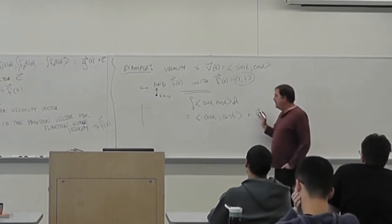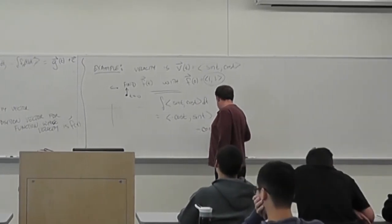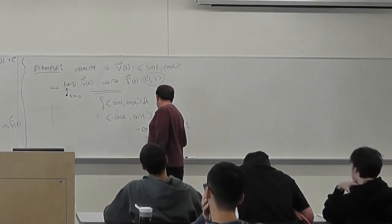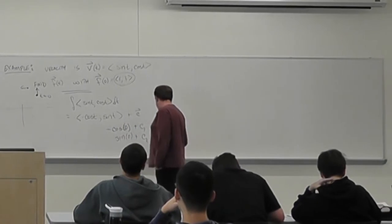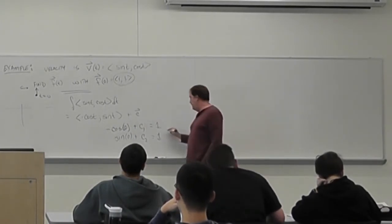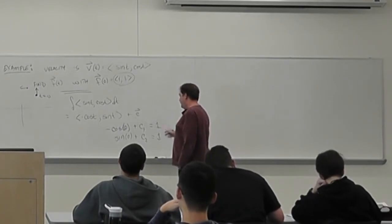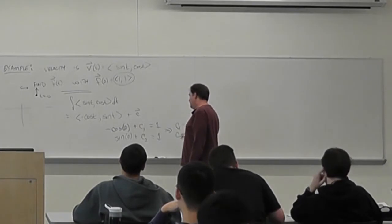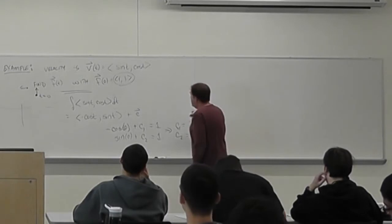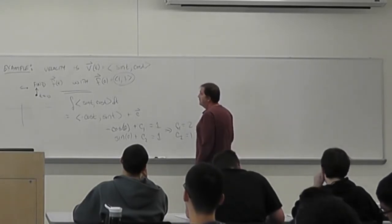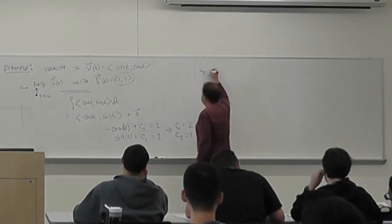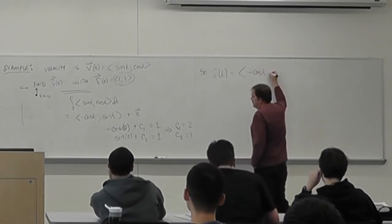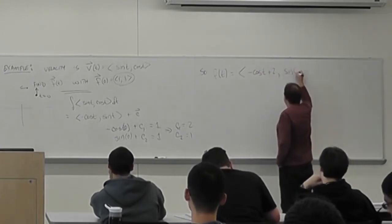I need to use the fact that -cos(0) + c1 = 1, and sin(0) + c2 = 1. So that tells me c1 = 2, since cos(0) = 1 gives -1 + c1 = 1, and c2 = 1. So my function is F(t) = (-cos t + 2, sin t + 1).